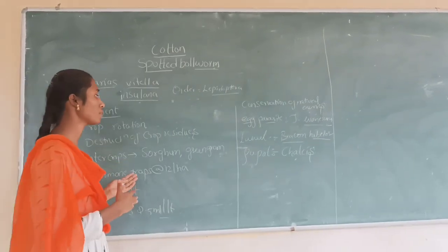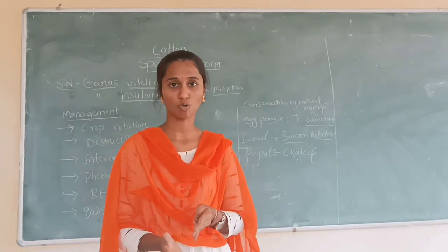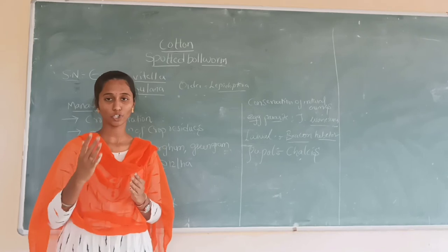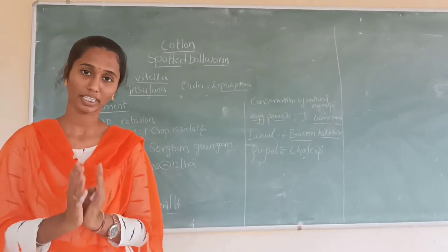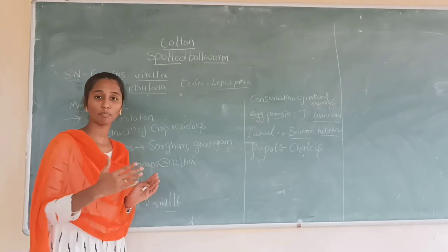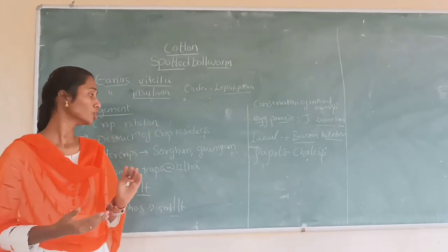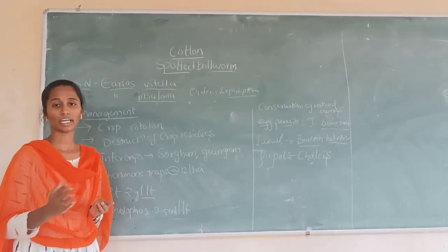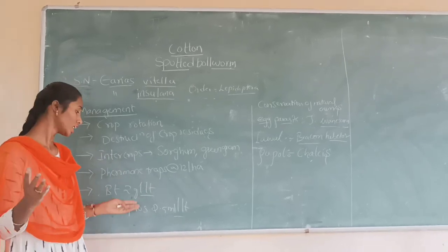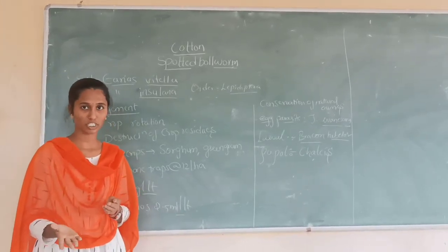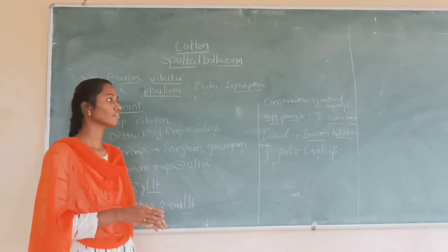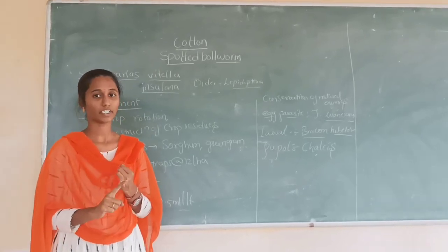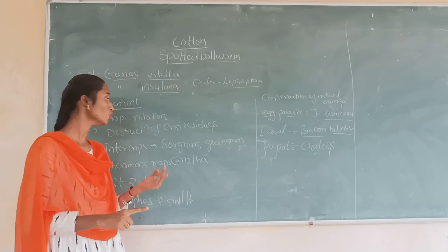We need to select the chemical and cultural methods. Normally, there are cultural methods and physical methods. On an ETL basis, we need to assess the economic threshold and then select the chemical. For Spotted Bollworm, also called the Spotted Boll Worm, the chemical options include profenofos at 0.5, and spinosad at 0.3 ml. So these are the different management approaches — identification, symptoms of damage, and management.